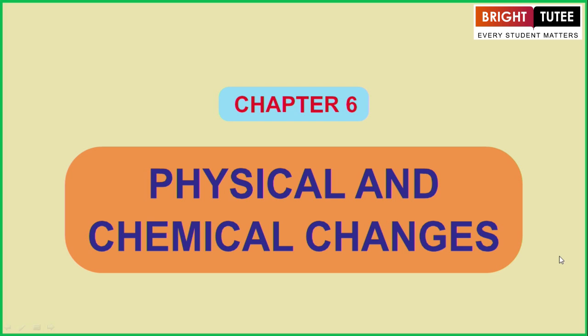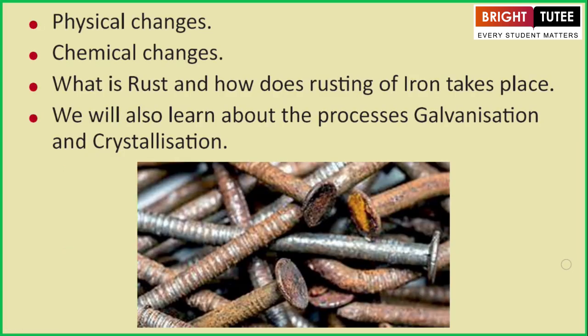What contents are you going to study in this chapter? We are going to study physical changes, chemical changes, we will study what is rust and how rusting of iron takes place, and we will also learn about the processes of galvanization and crystallization.